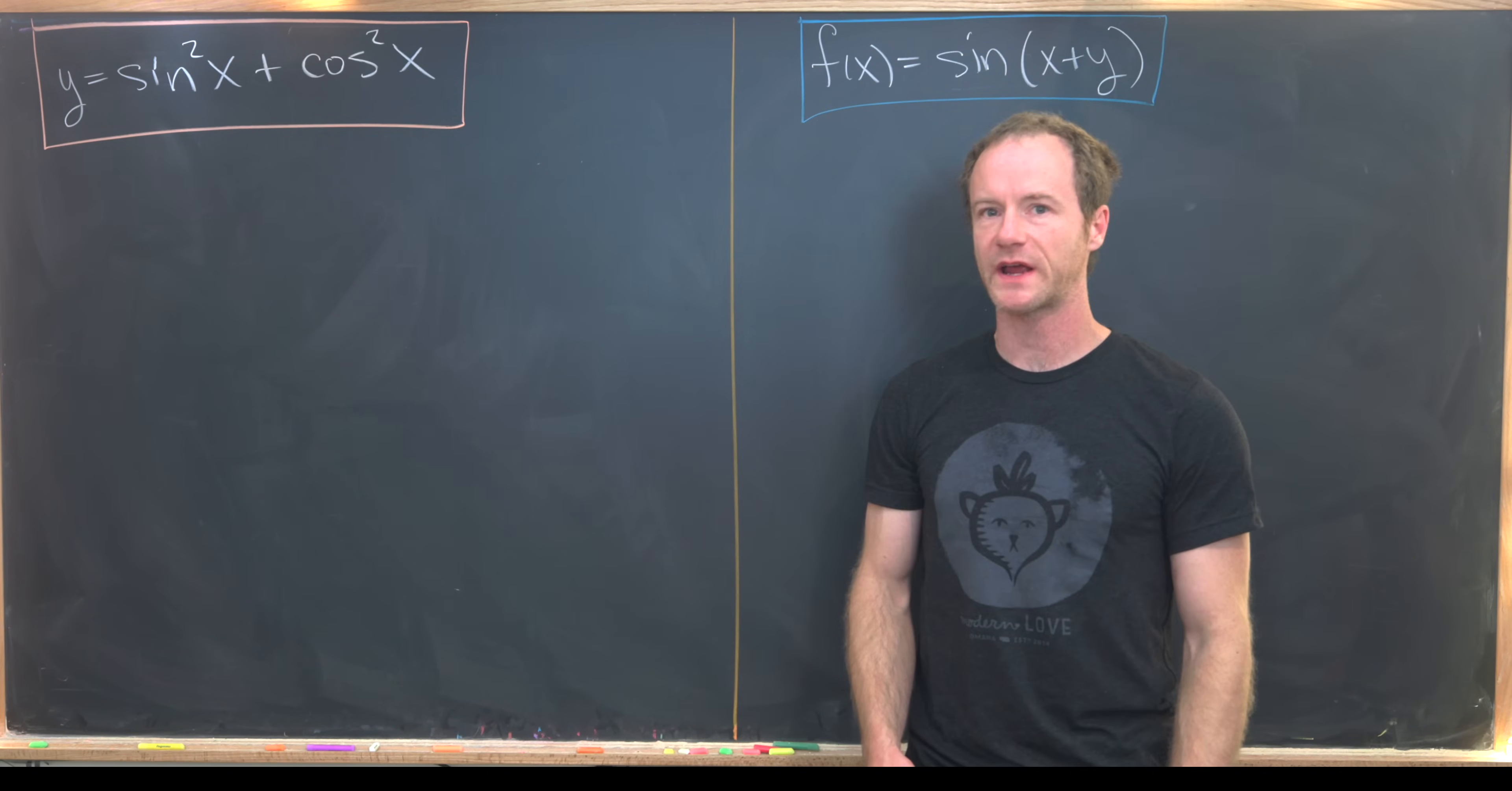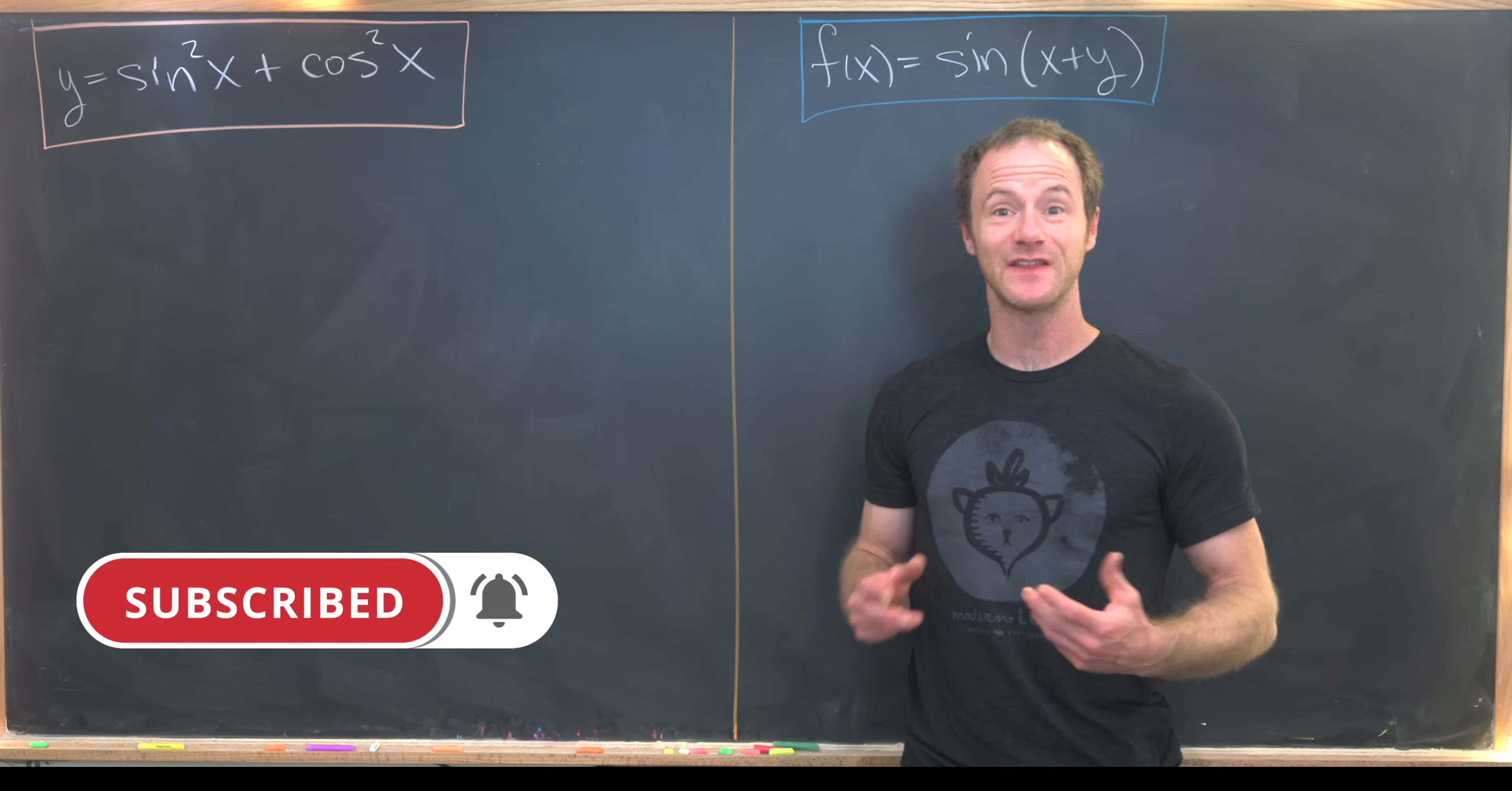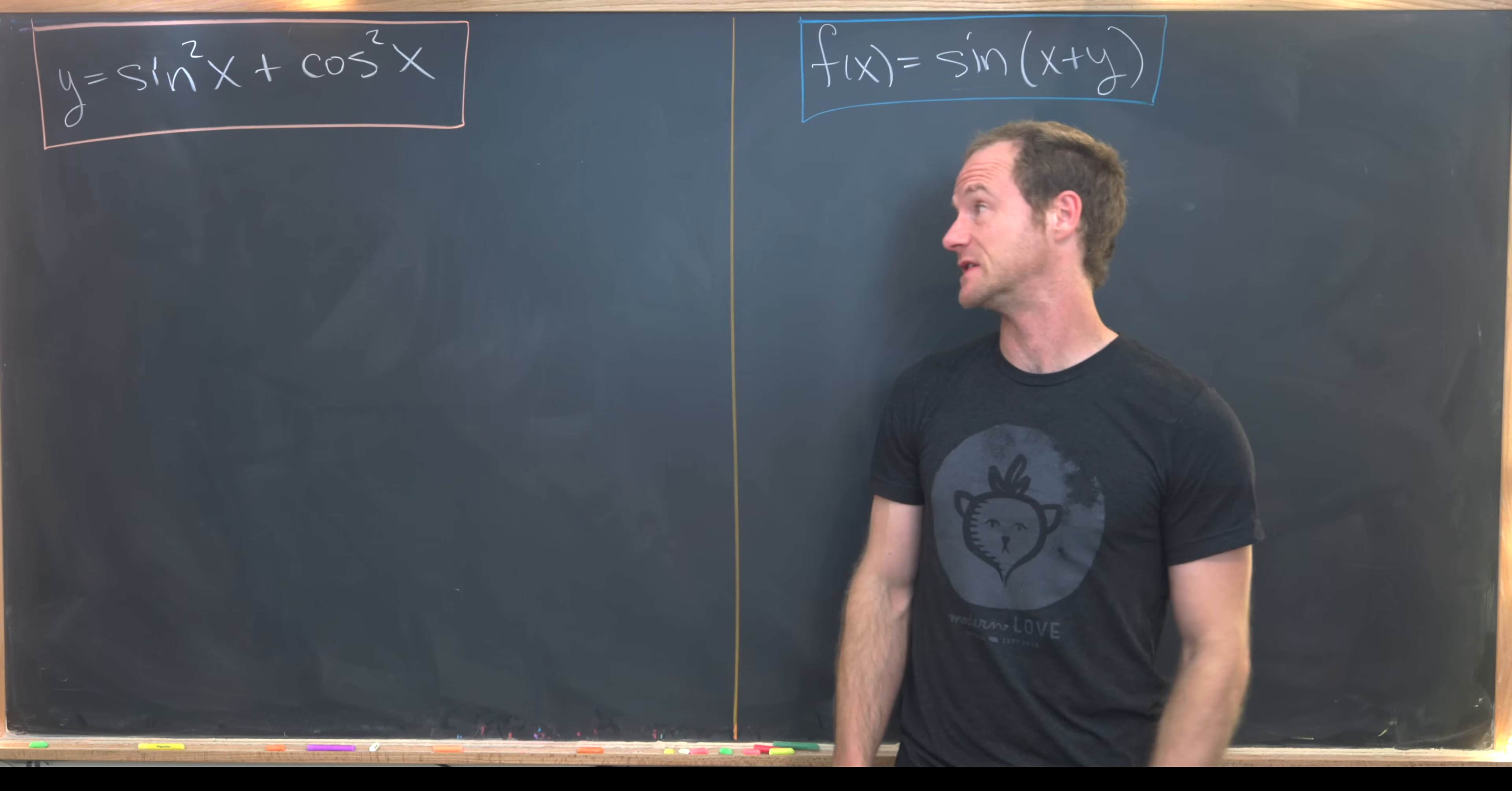Here I want to show you a nice quick trick for deriving trigonometric identities. We're going to do it via two examples, and I'm very careful to use the word 'derive' instead of 'prove' because these trigonometric identities are at the heart of proving some of the things we will use in this derivation.